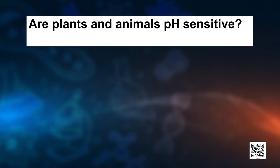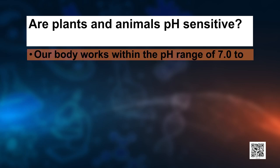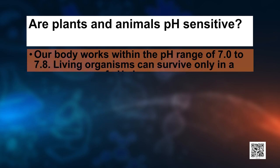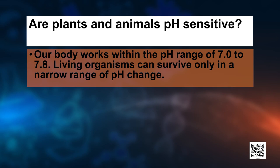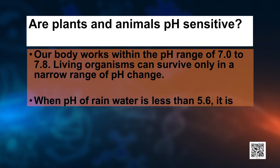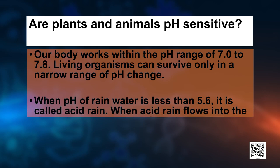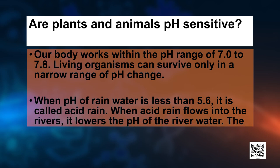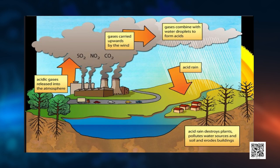Now we need to know whether pH has some importance in our lives. Are plants and animals pH sensitive? Yes — our body works within the pH range of 7 to 7.8. Living organisms can survive only in a narrow range of pH change; if the pH change is too much, there is some disease. When the pH of rain water is less than 5.6, it is called acid rain. When this acid rain falls into rivers, it lowers the pH of the river water, and this lowered pH is not good for the survival of aquatic life.